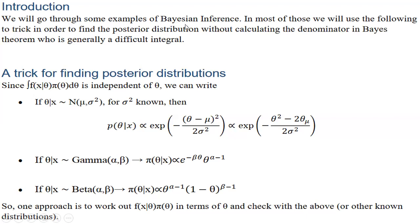Introducing examples relating to Bayesian estimation, we will use the following trick in order to find the posterior distribution without calculating the denominator in Bayes' theorem, which is generally a difficult integral. The trick for finding the posterior distribution is that we integrate f(x | θ) and π(θ) dθ, which is independent of θ.